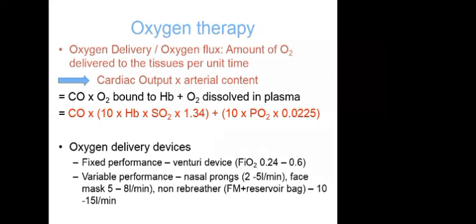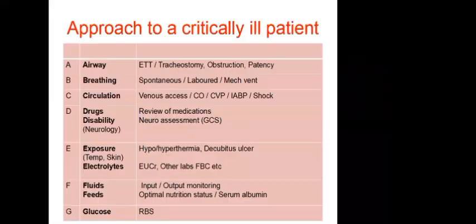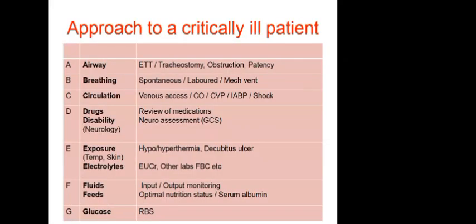Organ support in ICU begins with oxygen therapy, which is very important. Key components include oxygen delivery (DO2), factoring in cardiac output, hemoglobin, saturation, and partial pressure of oxygen — this equation is critical in ICU practice. Oxygen delivery devices are divided into fixed-performance and variable-performance devices.